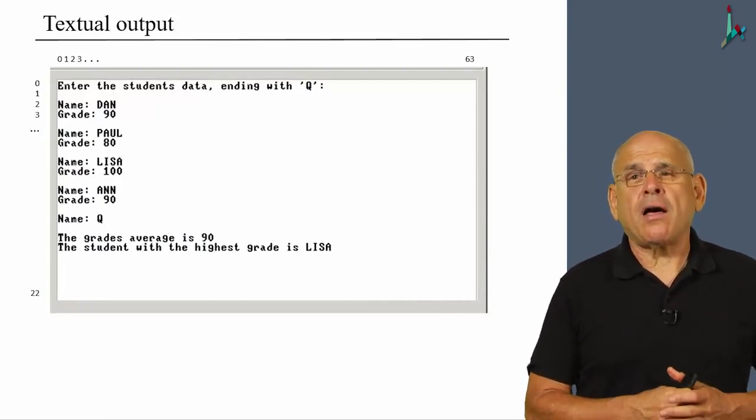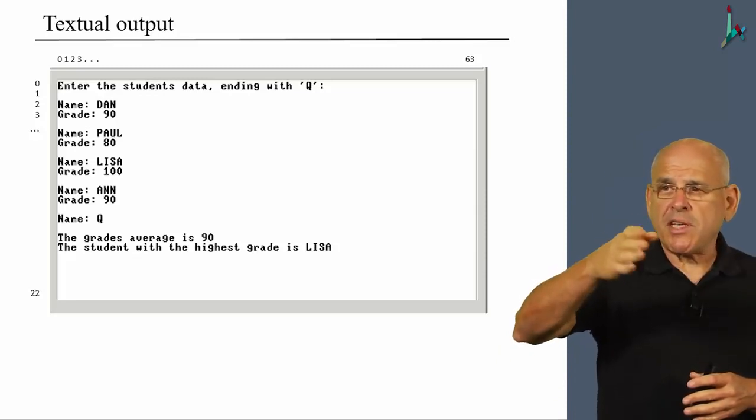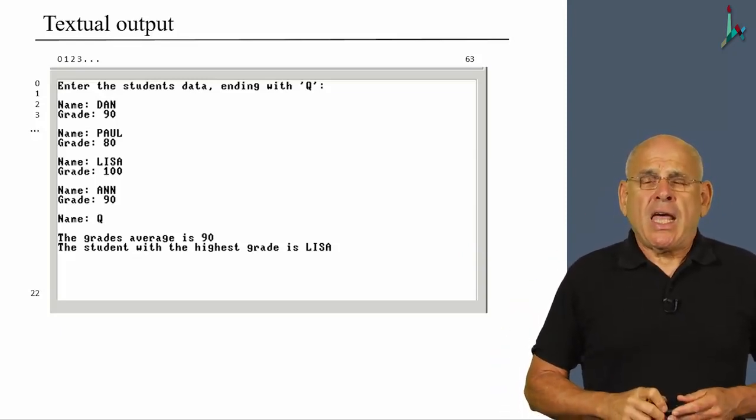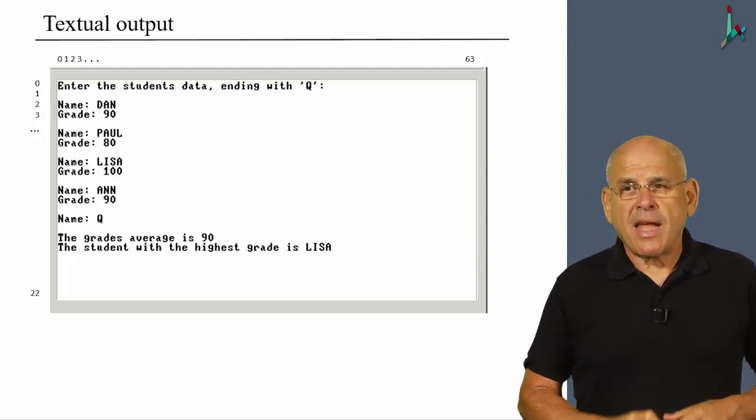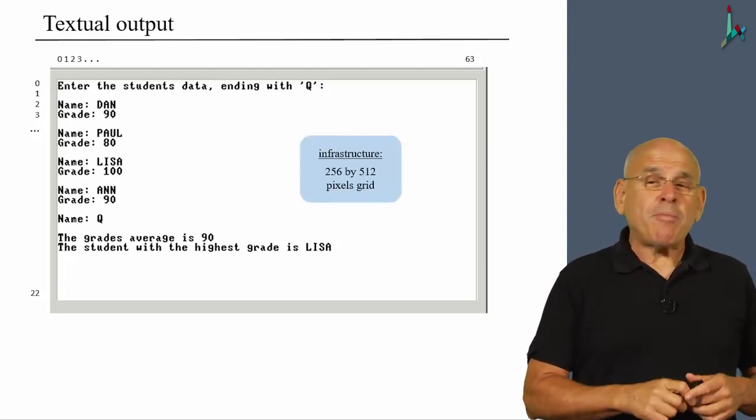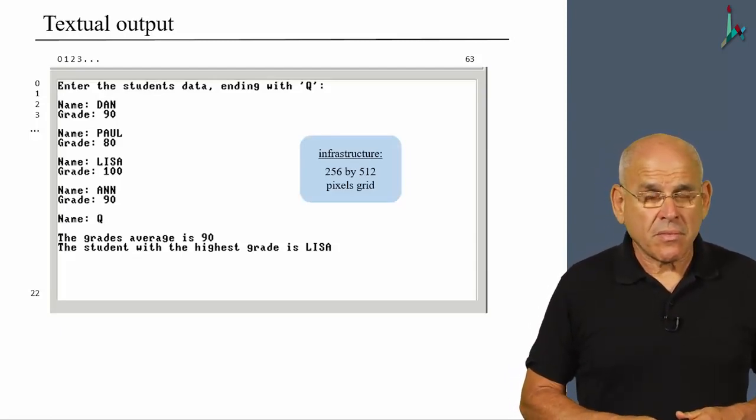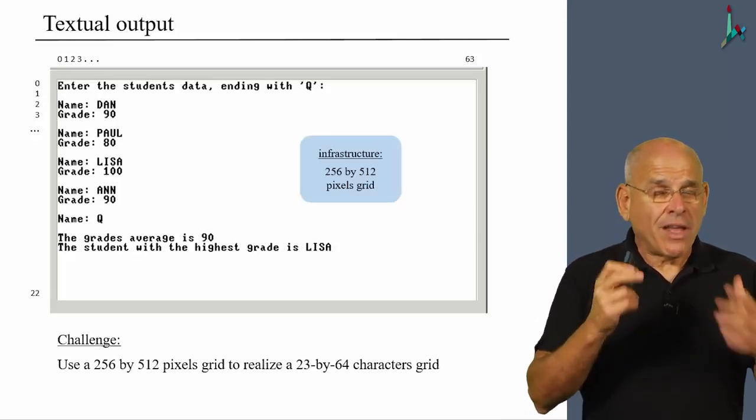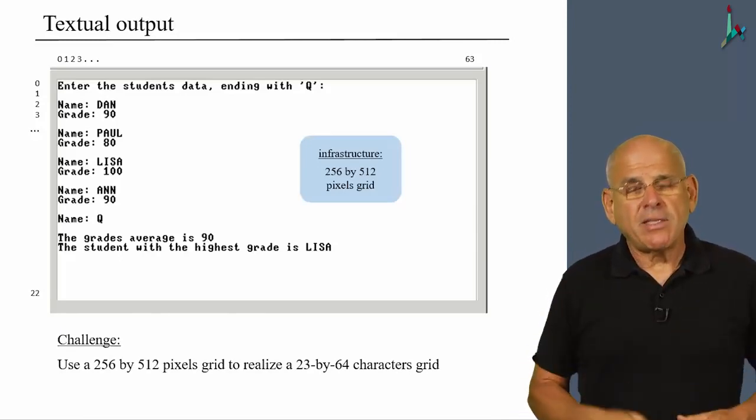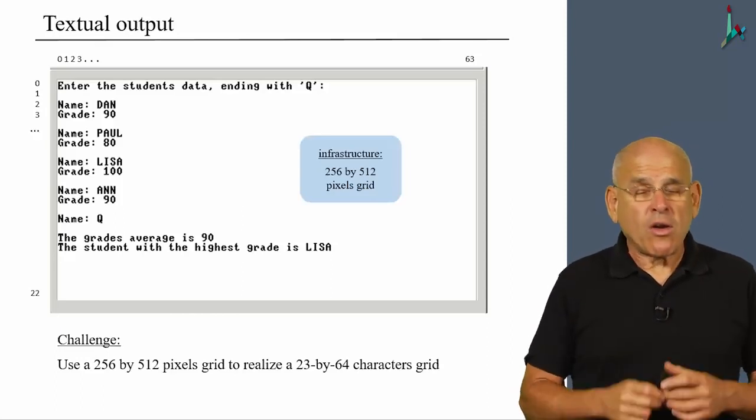All right, so with that, here's a typical textual output. We see that the screen is characterized by a grid that runs from 0 to 63 on the x-axis and 0 to 22 on the y-axis. And yet, we have to remember that the actual physical screen is still 256 by 512 pixels, which is represented in our computer memory using a block of 8K 16-bit words. We are facing the low-level challenge of using a 256 by 512 pixels grid to realize a 23 by 64 characters grid designed for textual applications.